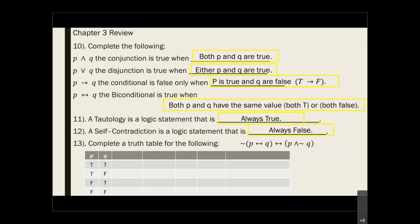They asked us to construct the truth table for this item: the negation of P, if and only if Q, if and only if P AND the negation of Q. We need to do the parenthesis first — we don't want to do the negation on the outside first, so we start inside the parenthesis.